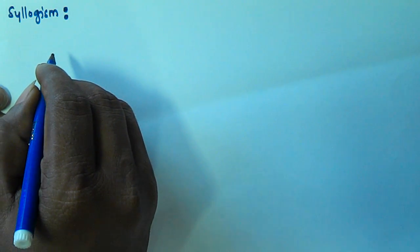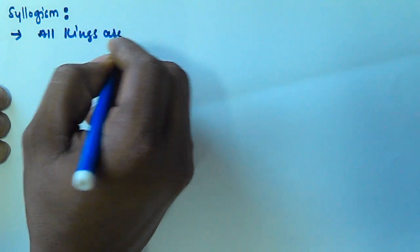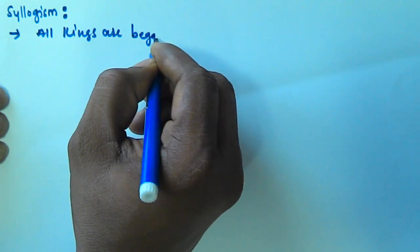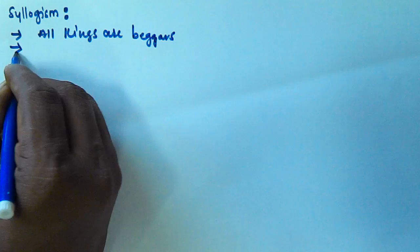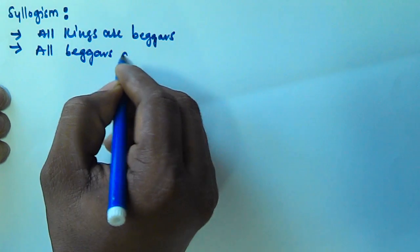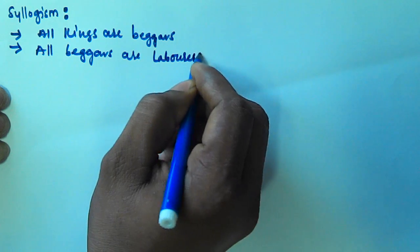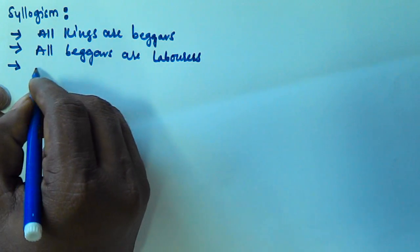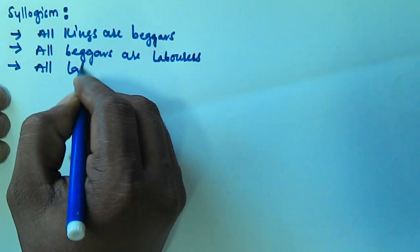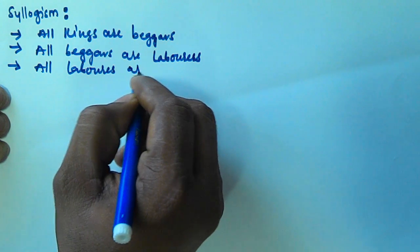Hello friends, in this video we will see another solution problem based on three statements. The first statement given is: all kings are beggars. The second statement given is: all beggars are laborers. The third statement given is: all laborers are careless.